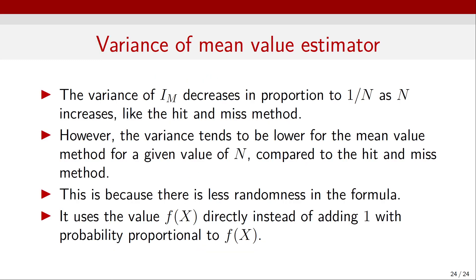Looking at the variance of the mean value estimator, it also decreases in proportion to 1 over n as n increases — the same as the hit-and-miss method. However, the variance tends to be lower for the mean value method for a given value of n compared to hit-and-miss. This is because there is less randomness in the formula: it uses the value f of x directly instead of adding 1 with probability proportional to f of x. We directly sampled f of x by sampling the variable x, instead of sampling both coordinates x and y as in the previous method. Because less randomness is used, the formula ends up being more accurate. That's it for this video, thank you for watching.